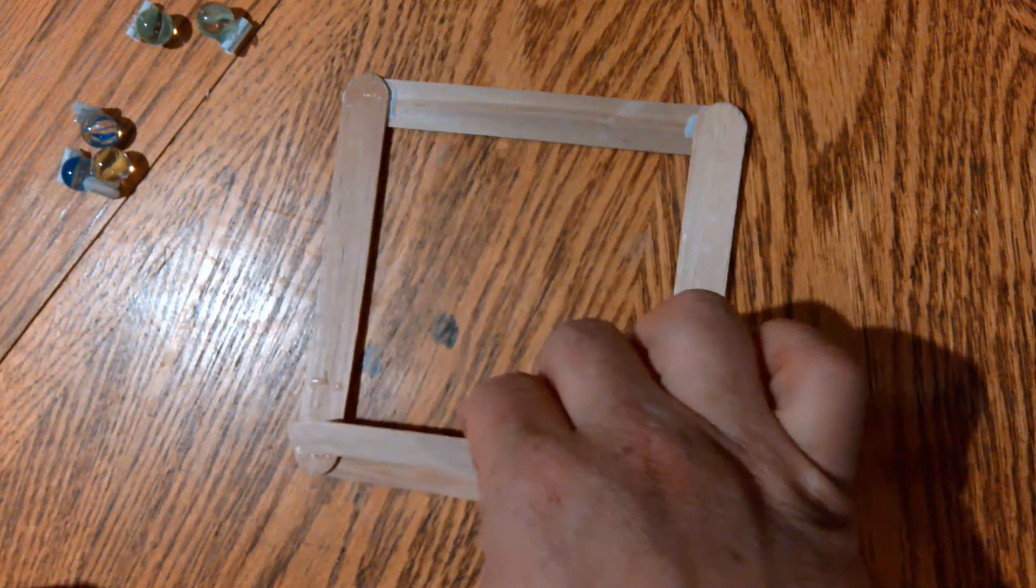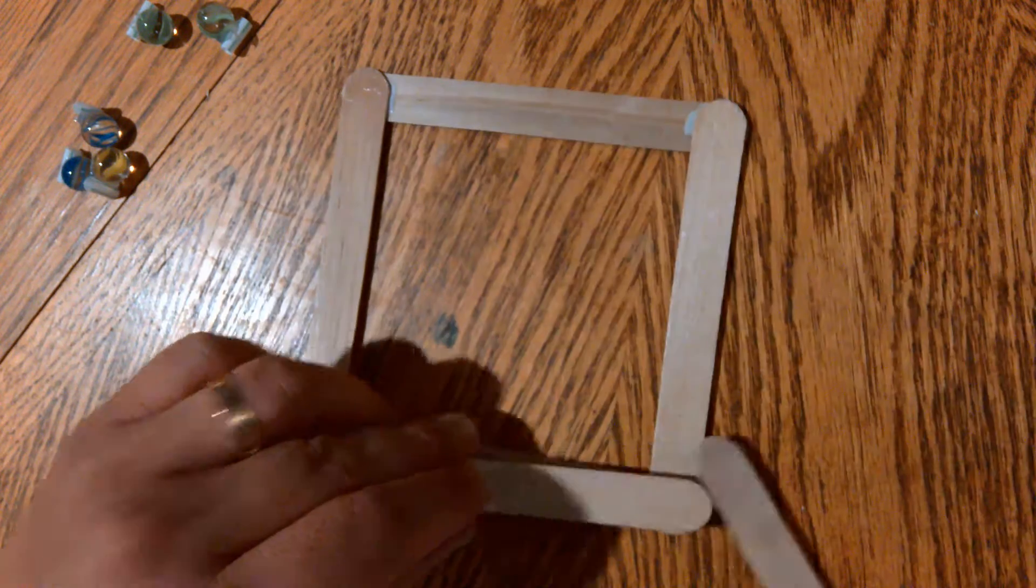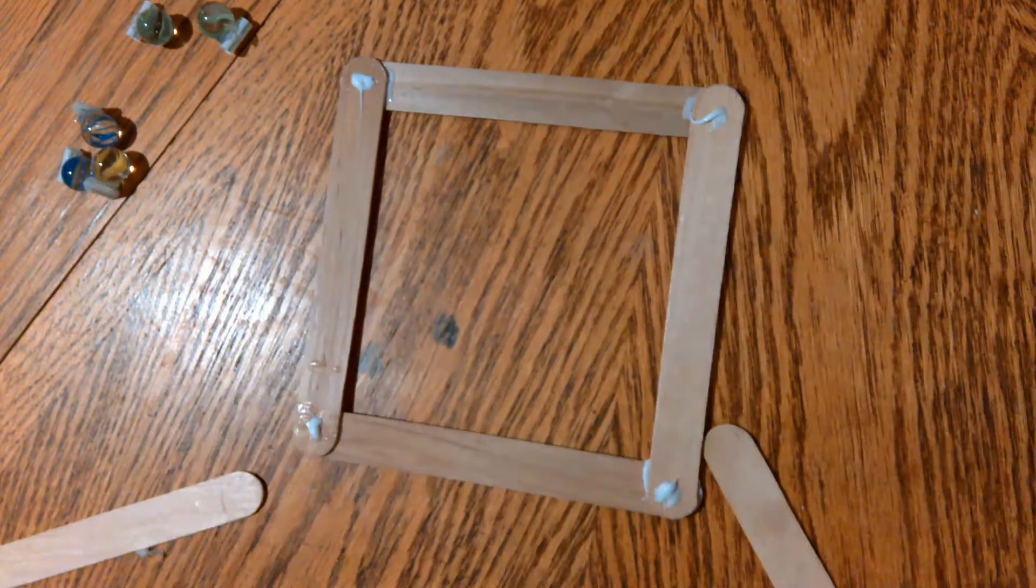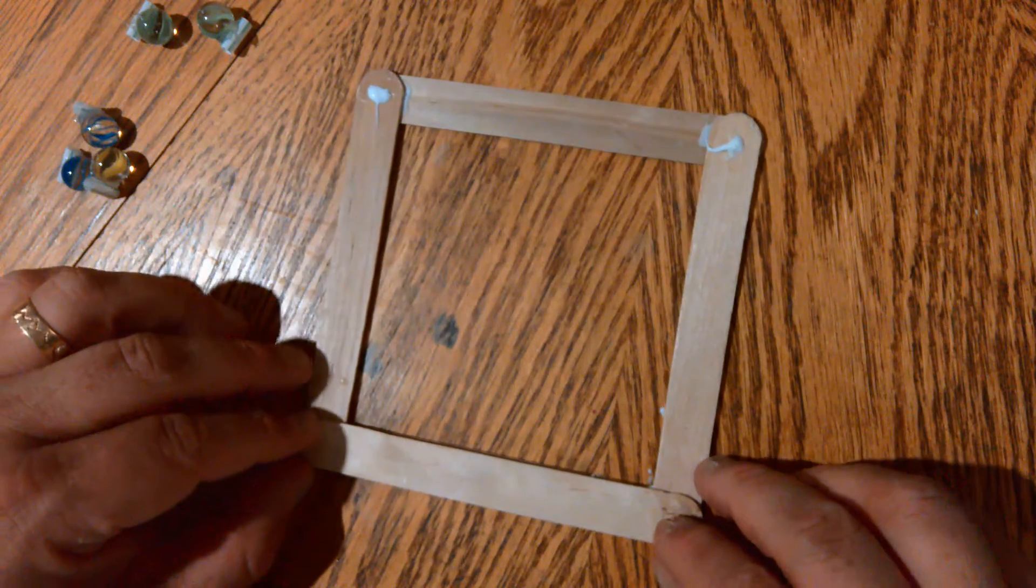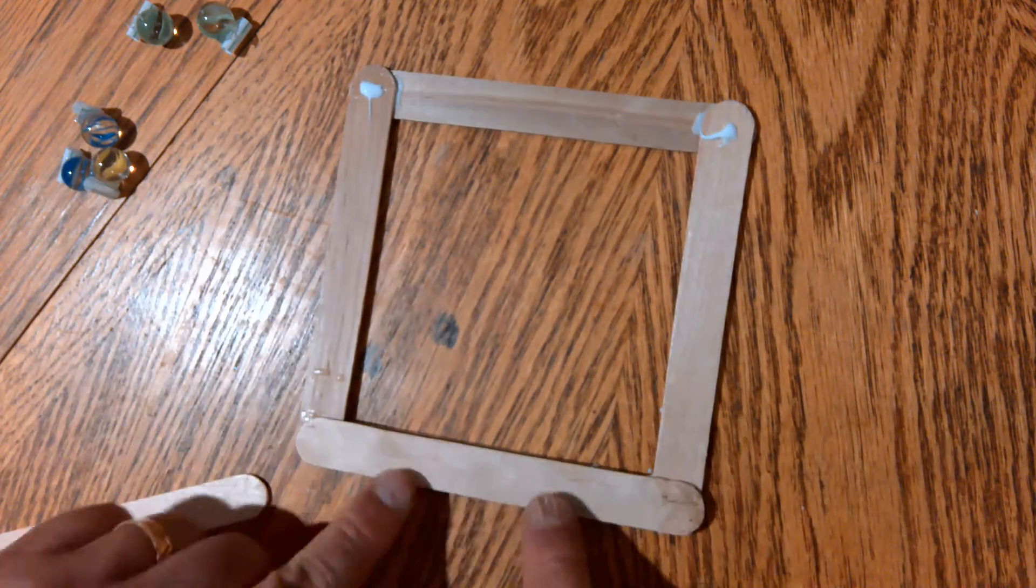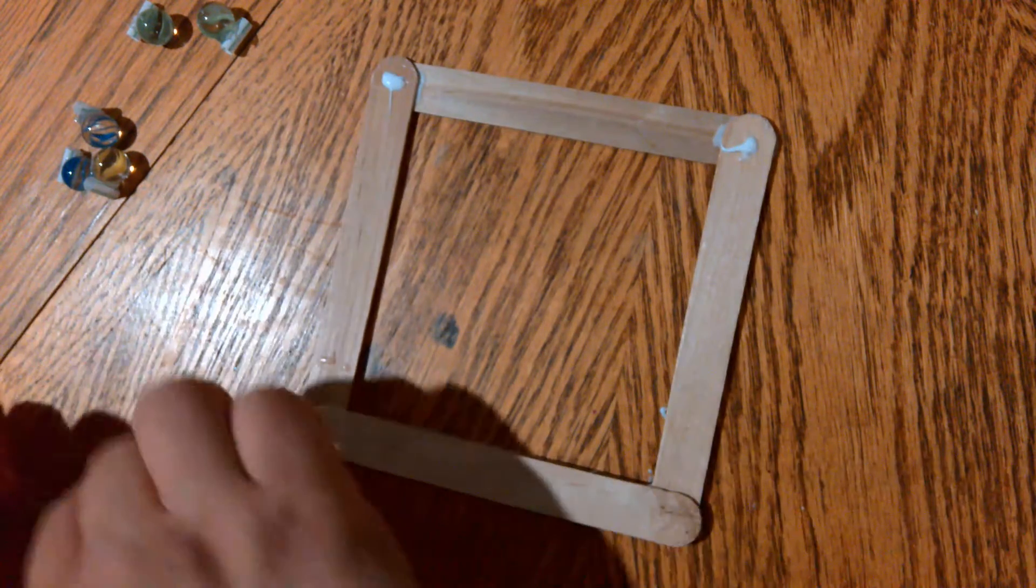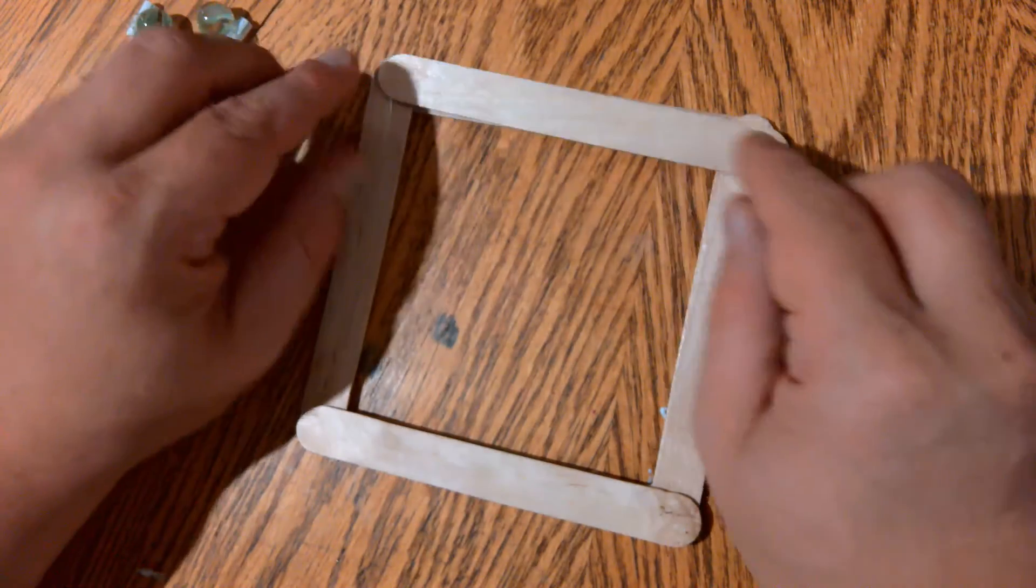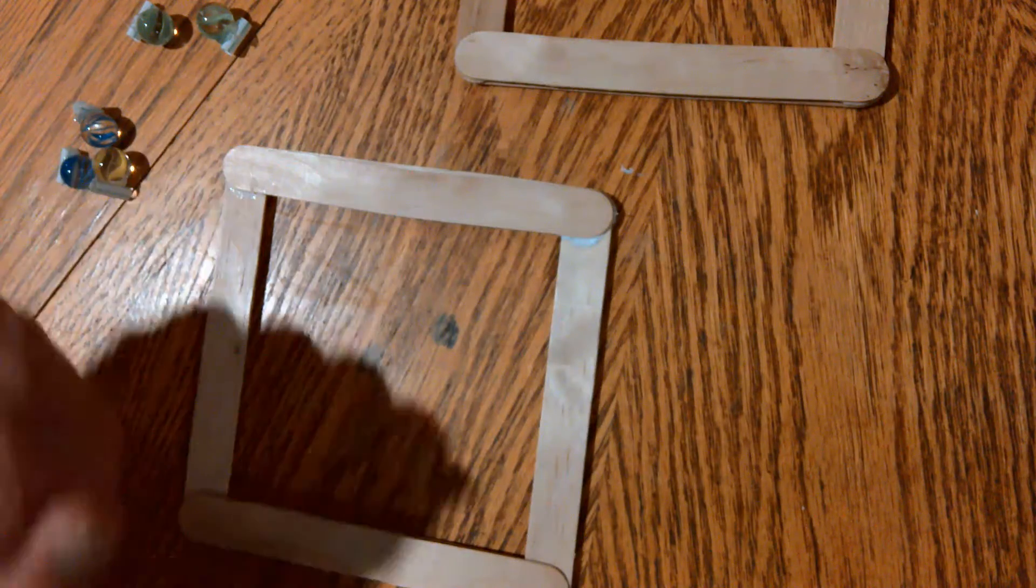Once you have these four pieces glued together, take another two craft sticks and glue them here and here. Make sure these two craft sticks are lined up well so that you can have a solid surface to glue upon. Set these frames aside and allow them to dry.